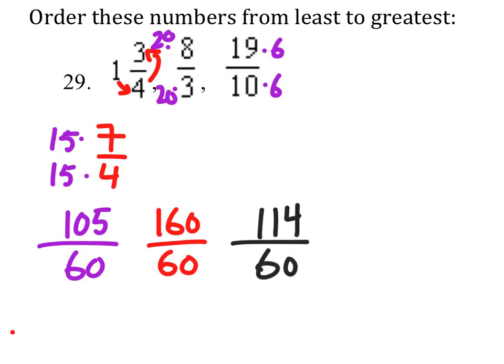From least to greatest, it appears that the smallest one would be 105 over 60. So that is the 1 and 3 fourths.